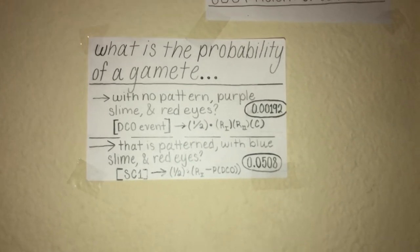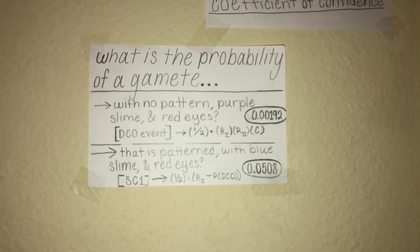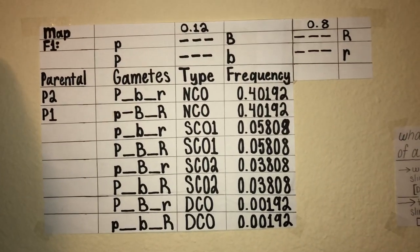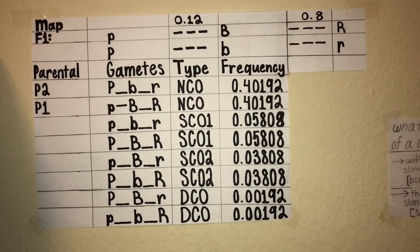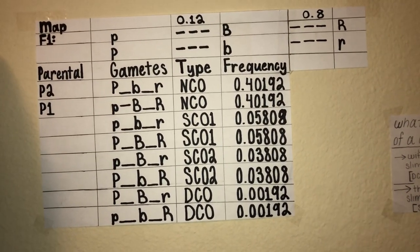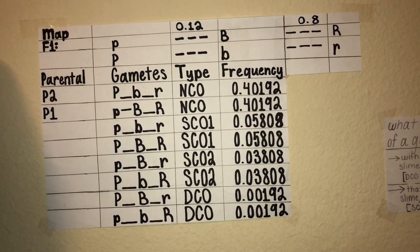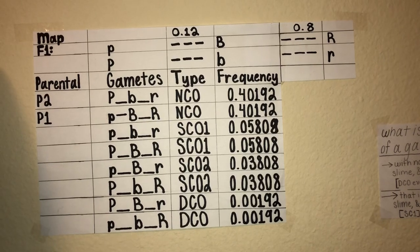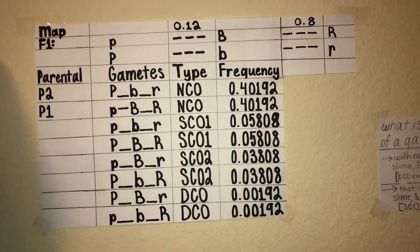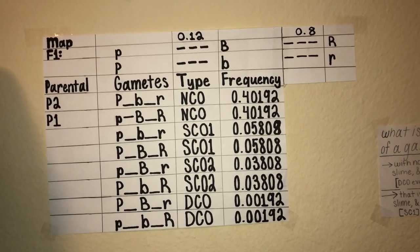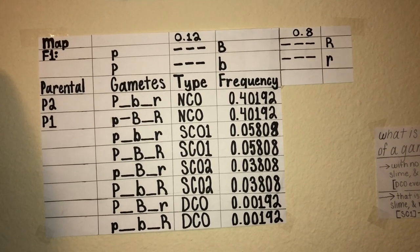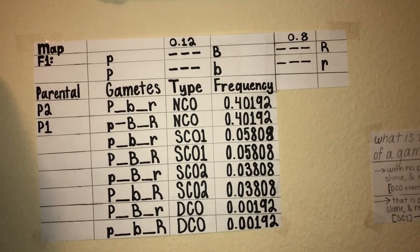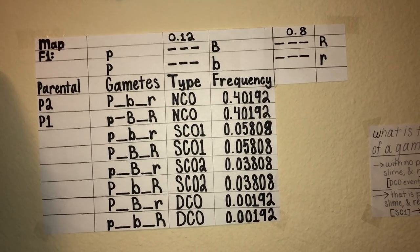We can use these same formulas and values to calculate the frequencies of all potential gametes from our F1 individual. We see that we have eight different gamete types, two of which are parental, and four different genetic event types: non-crossover, single crossover one, single crossover two, and double crossover. Using the values from our genetic map, we calculated the potential frequencies of each specific gamete.